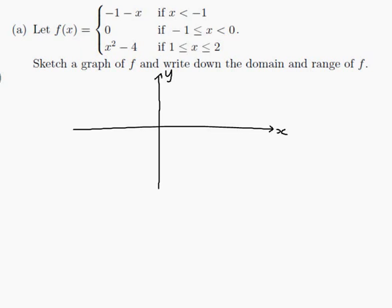We need the places where the function changes its definition — those are important points to put on the graph. So x equals minus 1, x equals 0 (we'll leave that one off, it's the origin), x equals 1 and x equals 2 — they are all the actual values of x mentioned in the definition of f. Now I can draw each part of the graph separately knowing where each part is.